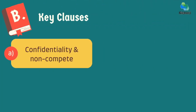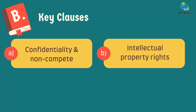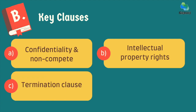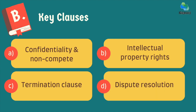Under key clauses, the first is confidentiality and non-compete, which clearly defines any confidentiality agreements to protect sensitive information and, if applicable, outlines non-compete clauses specifying duration and geographical limitations. Next are intellectual property rights, clarifying the ownership of intellectual property created during employment along with obligations regarding non-disclosure of proprietary information. The termination clause specifies the conditions under which either party can terminate the contract, including details about the notice period and any severance packages. Dispute resolution outlines the process for resolving disputes whether through arbitration, mediation, or legal action, along with specifying the governing laws and jurisdiction.